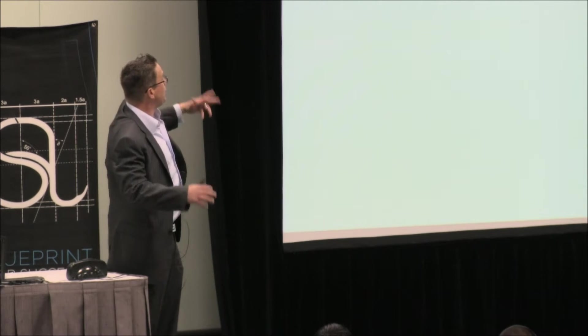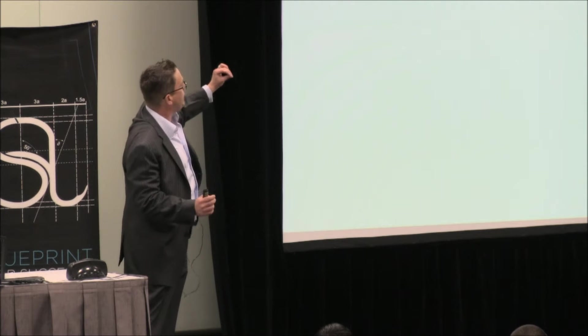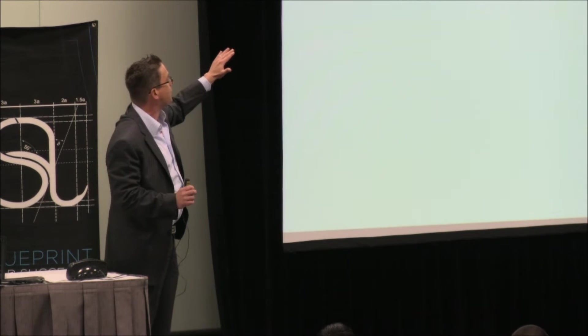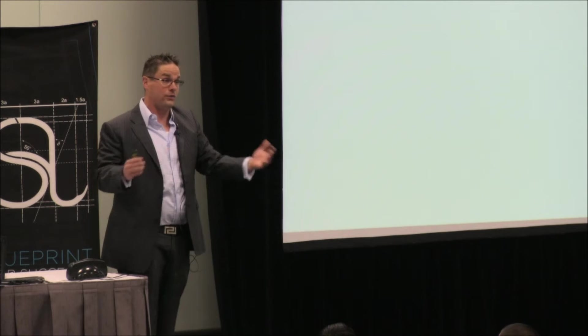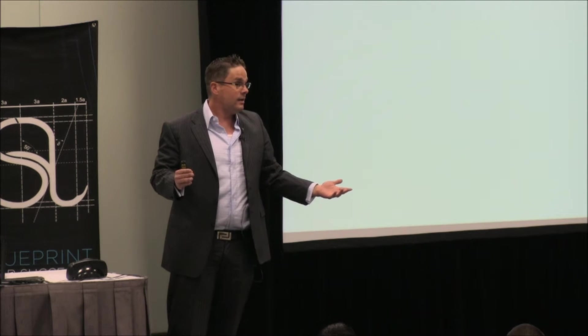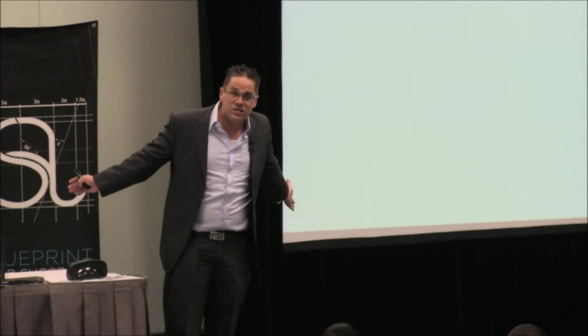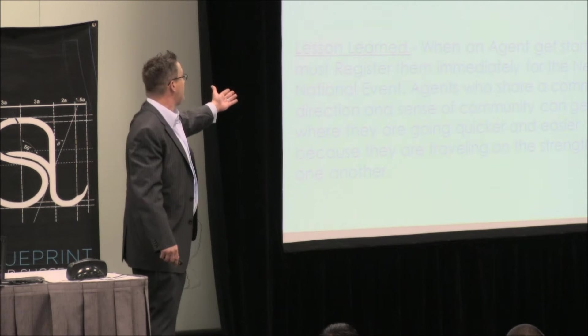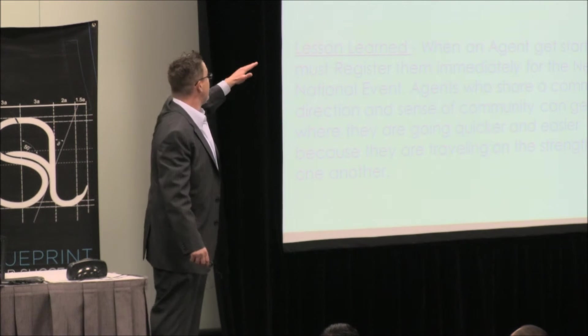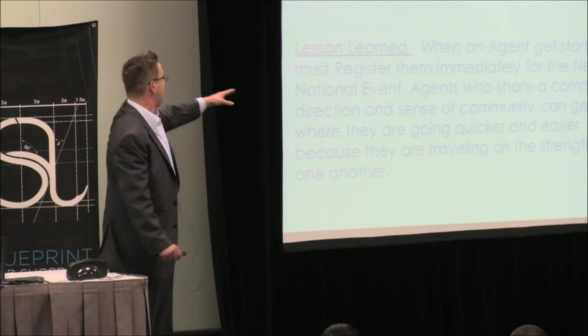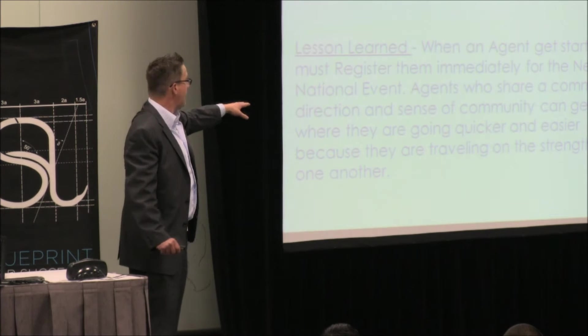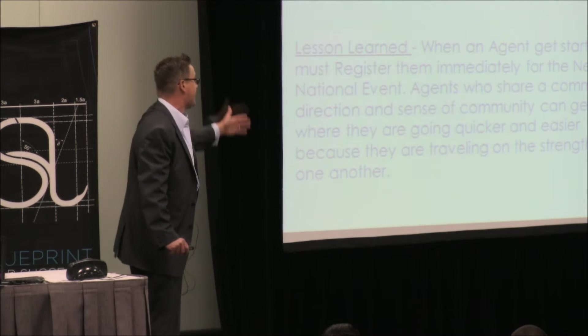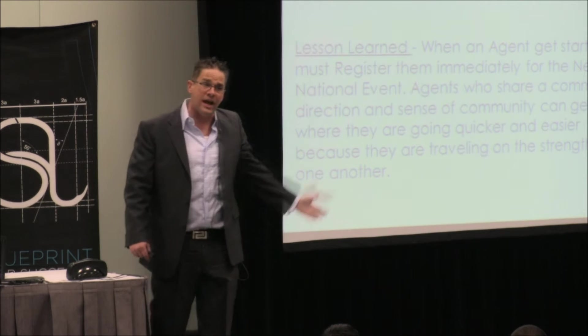Here's a couple of facts about geese that a lot of you probably already know. Number one is this. As each bird flaps its wings, it creates an uplift for the birds that are following. By flying in a V formation, the whole flock adds 71% greater flying range than if one bird flew by itself. Do you guys see that? You ever see them flying in V formation and think to yourself, what are they doing? Here's what they're doing. They're doing what we need to be doing. Here's the lesson I learned from that. When a new agent gets started, we must register them immediately for the next national event. Agents who share a common direction and sense of community can get where they want to go quicker and easier because they're traveling on the strengths of one another.